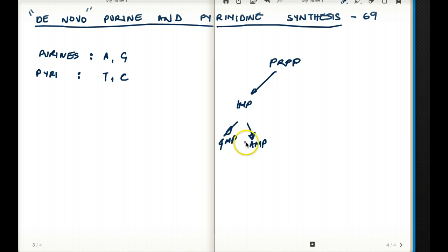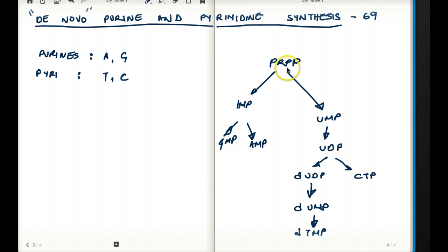From PRPP, if we go in the pyrimidine direction, we get UMP. From UMP, we make UDP. UDP makes two substances, dUDP and CTP. dUDP is further broken down to dUMP and dTMP.